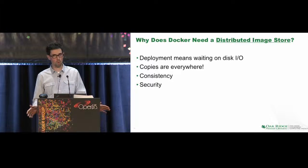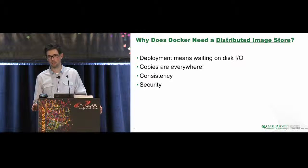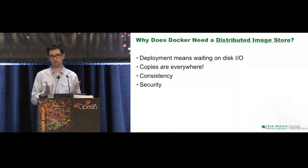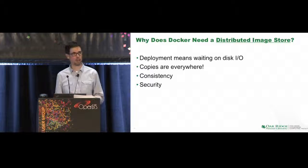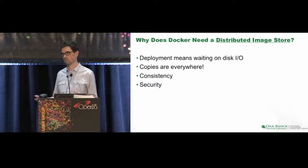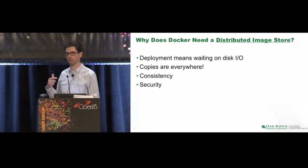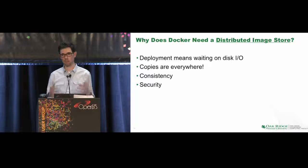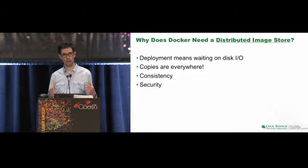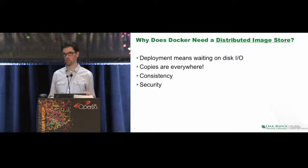Why does Docker need a distributed image store? It's actually a sore spot with Docker — something it really needs. Docker deployment means waiting a lot on I/O. You pull an image and spend most of the time waiting for it to extract that image from its tar file onto disk. Containers are very fast and run on bare metal, but most of that supposedly fast iteration cycle is spent waiting on disk I/O. It's wasteful because copies are everywhere — creating new copies on each system creates consistency issues. Furthermore, for security: if all your images are stored on a central image store and a new vulnerability comes out affecting one of those layers, you just have one layer to fix, and every new container started afterwards will have the correct patch.